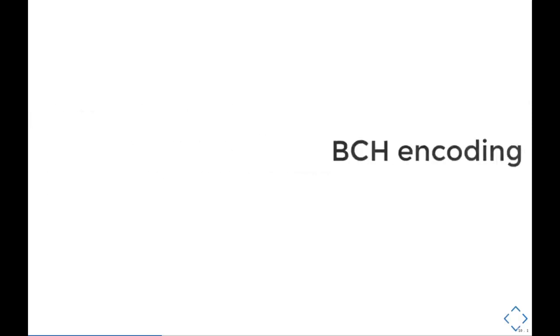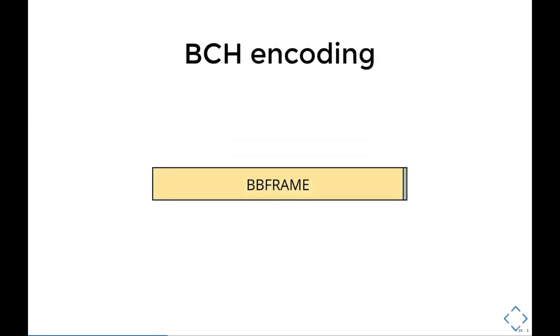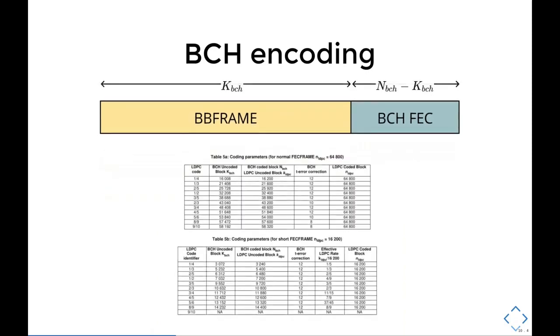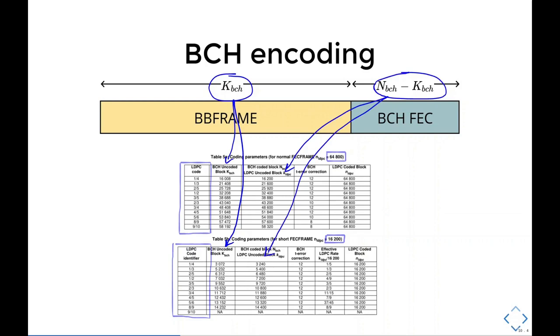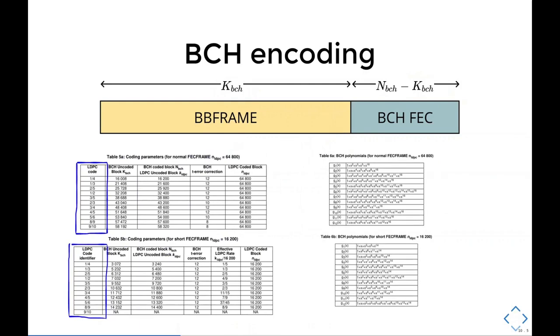BCH encoding takes a baseband frame as an input and appends a parity check to that. The size of this parity check code is given indirectly in the spec. The size is going to depend on the frame length and the code rate. The size of the BB frame is given in the BCH uncoded block column here, and to get the size of the BCH FEC word, we do BCH coded size minus BCH uncoded size.